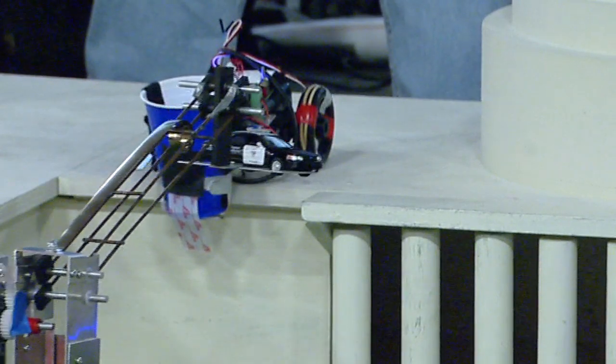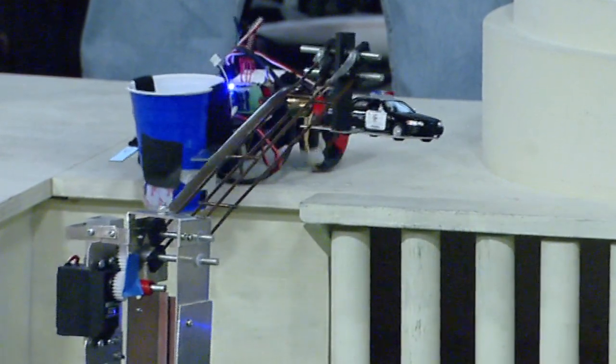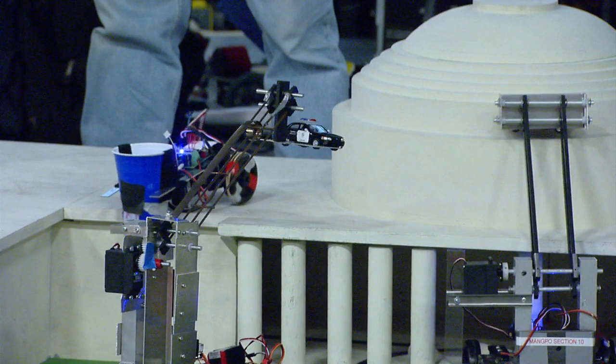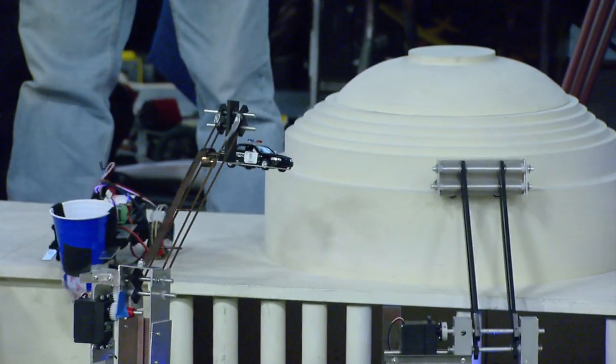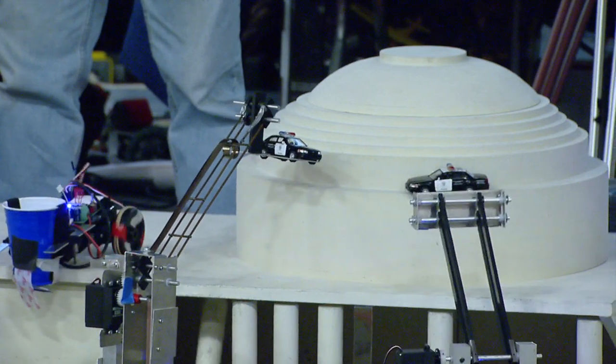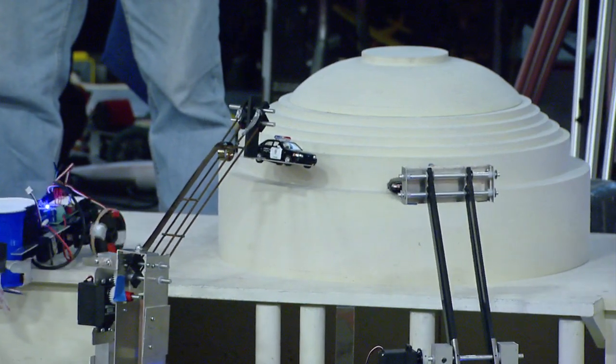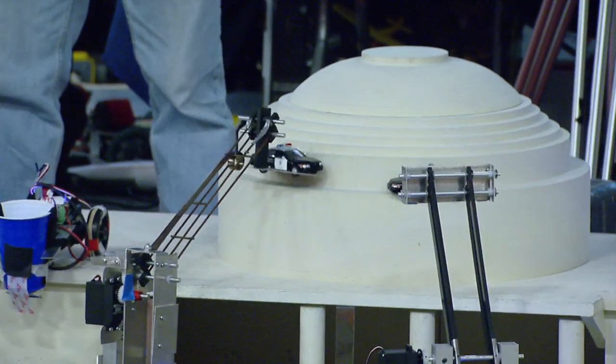One reason that we want to know the acceleration is because some objects respond poorly to a high acceleration. Here you can see a different sort of robot arm lifting a car. Instead of a gripper, these two robots use a forklift design.